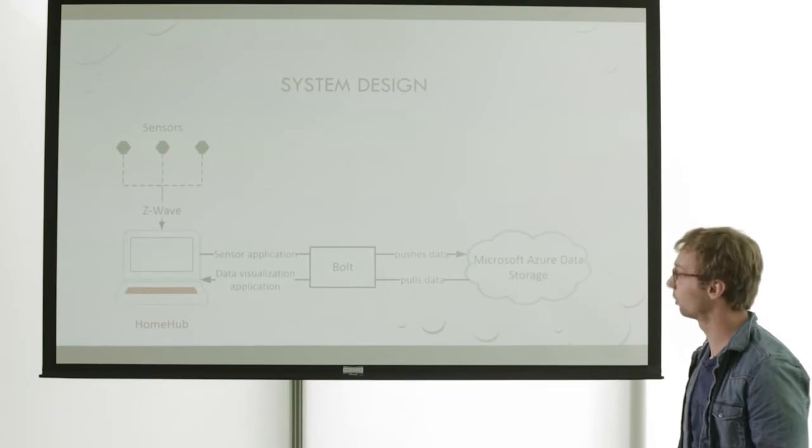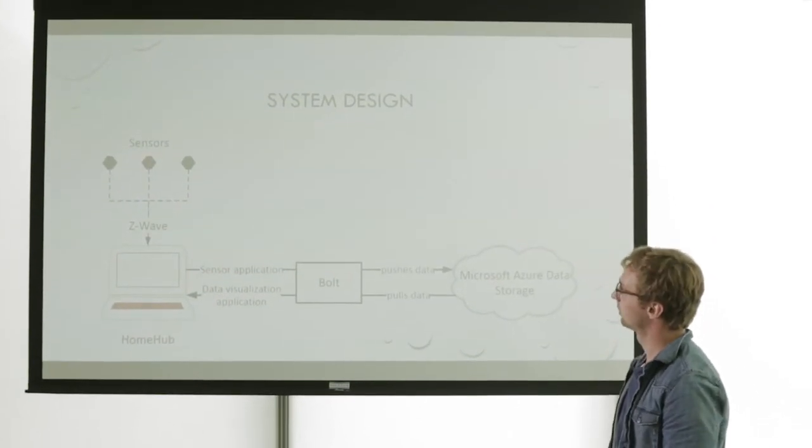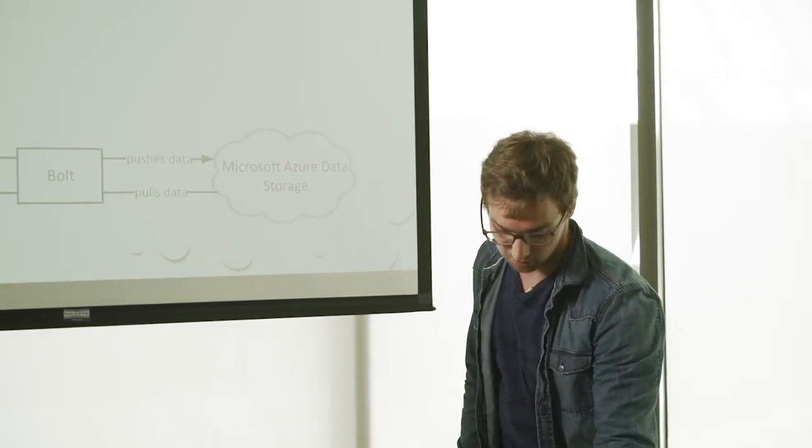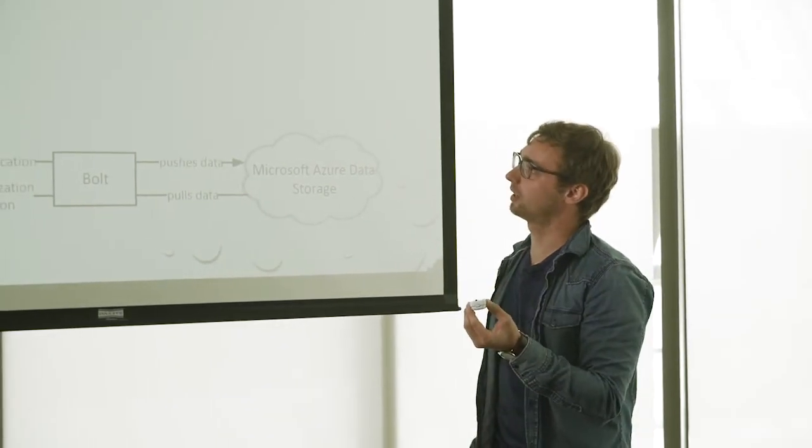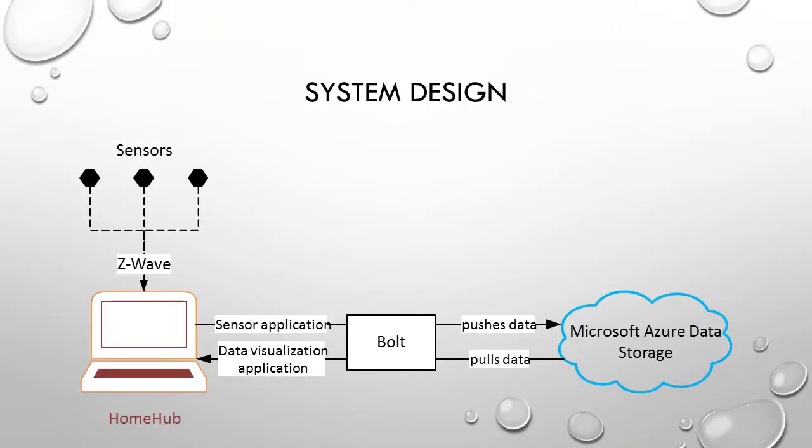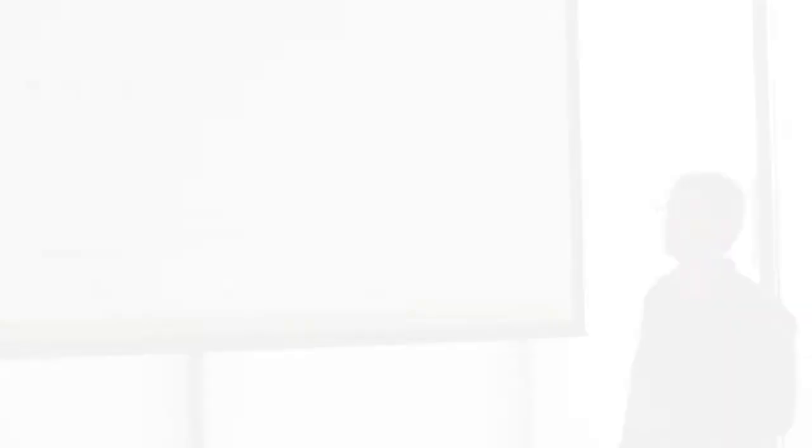I developed an application which has a system design as shown here. This system has one multi-sensor in the kitchen and two door and window sensors. One is at the fridge in the kitchen and one is at the front door of the house. There are 11 people living in the house, 11 students, so we have a lot of data.